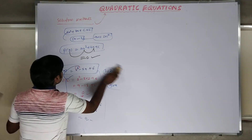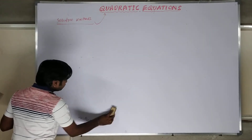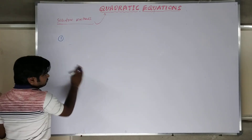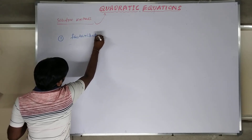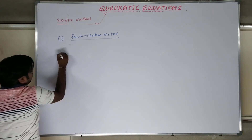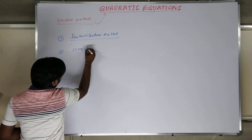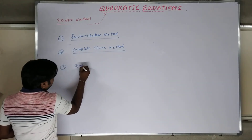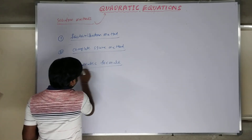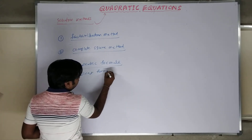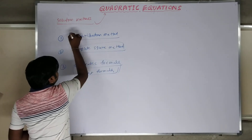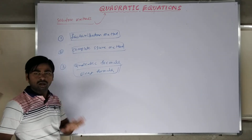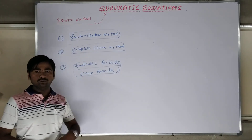To find the solution for this quadratic equation, we have basically three methods. Number one is called the factorization method. Number two is the complete square method. The third one is the quadratic formula, also called the direct formula. With these three methods, you can solve any second-order quadratic equation. If you solve one question with three methods, the answer must be the same. Any method you can use.